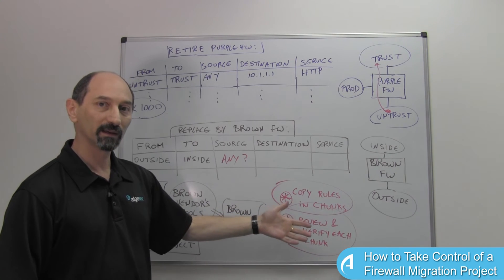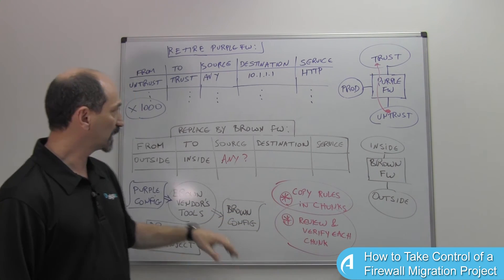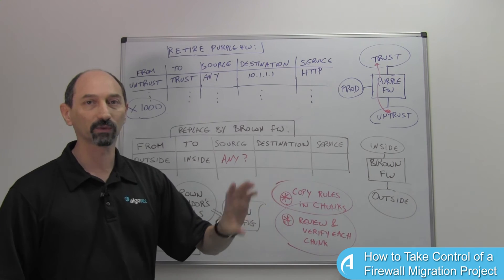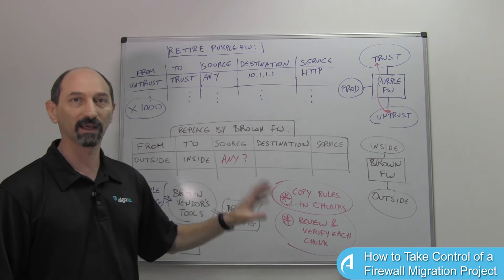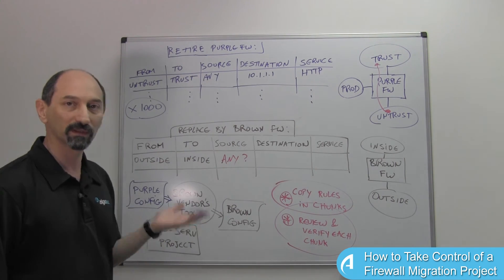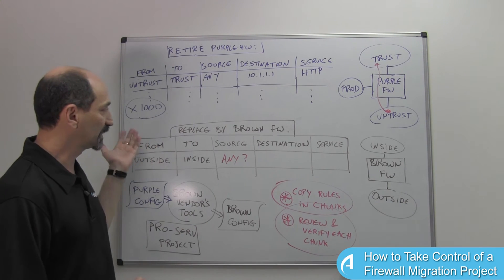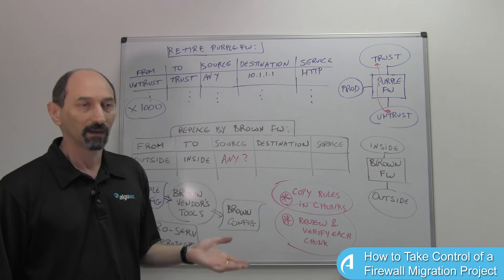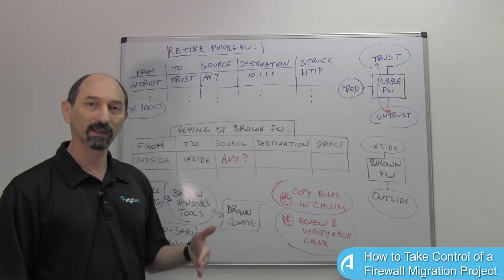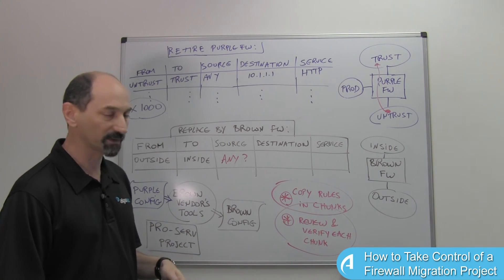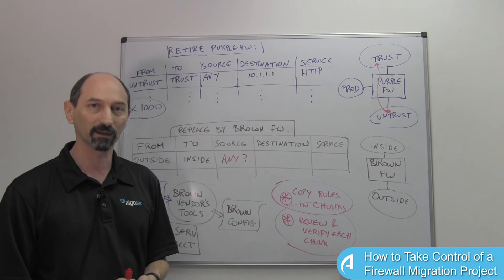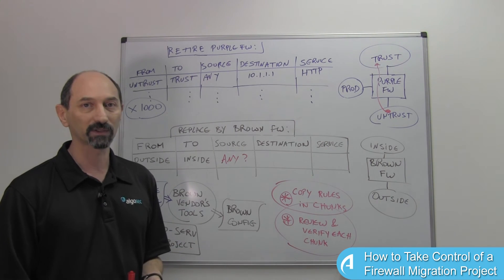If you look at it that way, then you can say: we have 1,000 rules, we're going to be copying over 20 rules every day, it's going to take us 50 days to do it. If you can handle 200 rules a day, then you'll do it in five days. But at least you have a plan and you can estimate how long it's going to take, and you have some assurance that by the end of the project you'll get something that is working to your satisfaction.